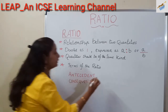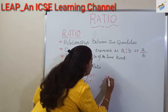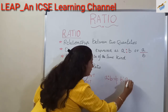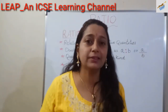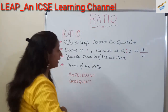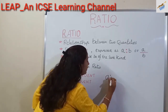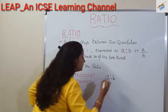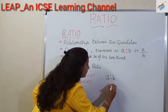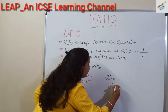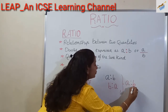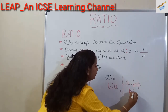Always remember that A is to B is not equal to B is to A. It should be kept in mind that the order of the ratio is also very important. That is, A is to B is entirely different from B is to A.